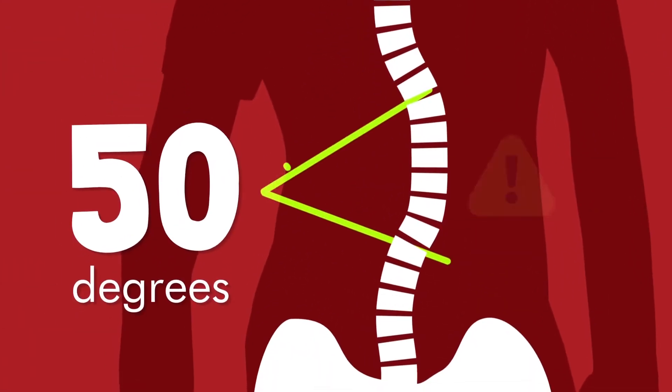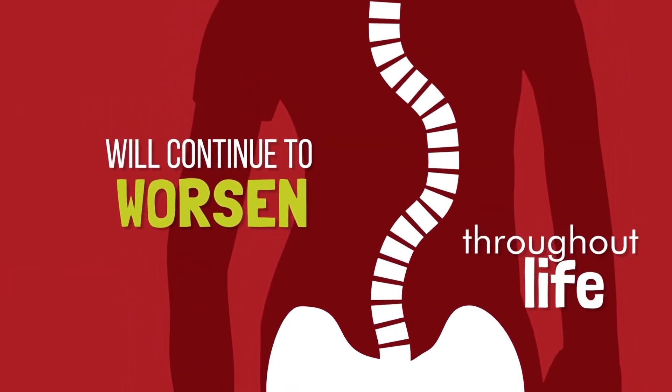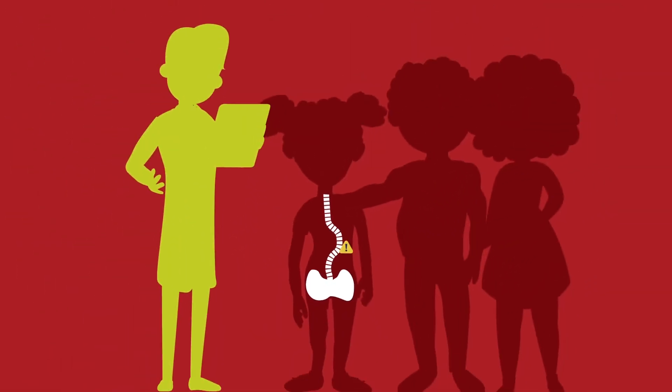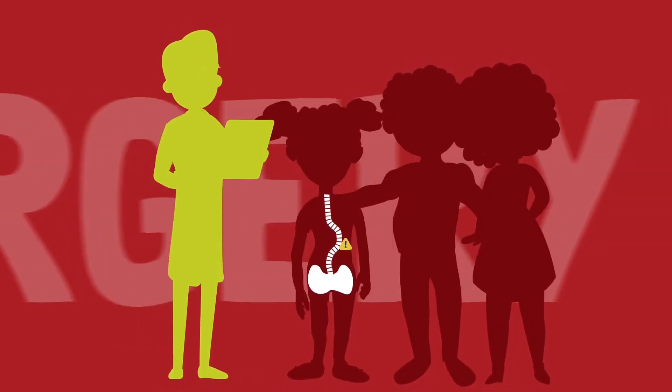We have learned that once the scoliosis curve gets to 50 degrees, it will continue to worsen throughout life. For this reason, we begin talking about the option of surgery when the curve reaches 50 degrees.